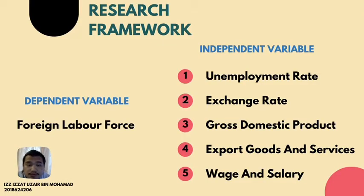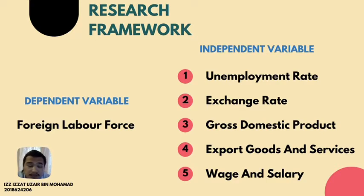In Chapter 3, there is a subtopic: Research Framework. Research Framework provides an underlying structure or model to support our collective research efforts. A framework helps us determine the right approach and methods to apply in a given situation based on what we are trying to learn, and helps to structure and plan our research activities. Throughout this research, we include one dependent variable and five independent variables as shown in the slide. The dependent variable is the foreign labor force, while the independent variables consist of unemployment rate, exchange rate, gross domestic product, export goods and services, and wage and salary. From these five independent variables, the research will examine whether they affect the dependent variable either positively or negatively, as a significant relationship.